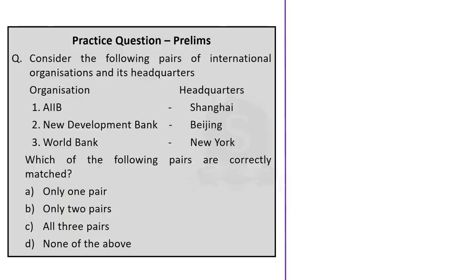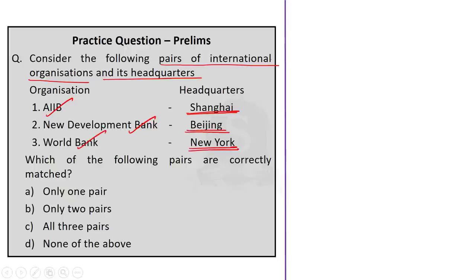Coming to the third question: Consider the following pairs of international organizations and their headquarters. First — Asian Infrastructure and Investment Bank, given headquarters in Shanghai. Second — New Development Bank, given headquarters in Beijing. Third — World Bank, given headquarters in Newark. Which pairs are correctly matched? In the first two pairs, the headquarters are interchanged — AIIB headquarters is in Beijing, and New Development Bank is in Shanghai. As for the World Bank, we all know the headquarters is in Washington DC, not Newark. So the correct answer is option D — none of the above.